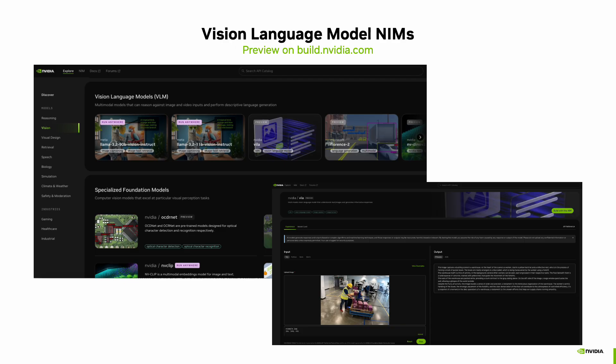There are many vision language model NIMs available on build.nvidia.com. These are multi-image visual language models deployable from cloud to edge, with previews available. You can upload a video and have the model provide information about the scene. Skills needed to use a VLM are minimal — knowledge of Python and familiarity with standard APIs. If you're fine-tuning VLMs on specific use cases, then domain knowledge, prompt tuning, and availability of a labeled dataset are needed.